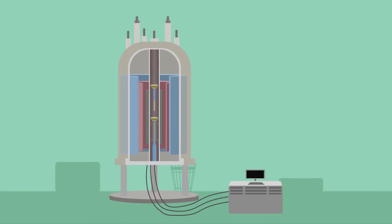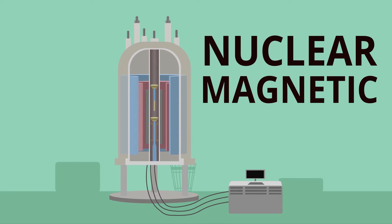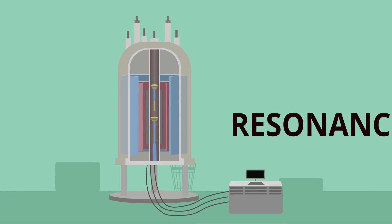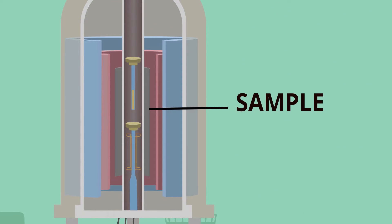Another test for honey adulteration is through the use of a Nuclear Magnetic Resonance Instrument, or NMR. This works by placing the sample in a strong magnetic field.